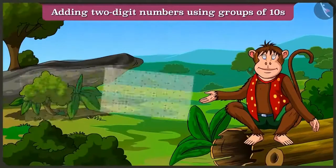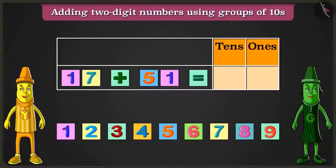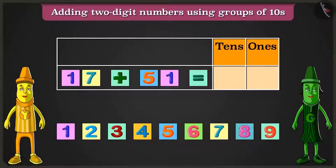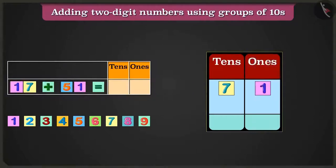Friends, today we will play an interesting game involving the addition of two-digit numbers. Greeny, look, this is a number block. The number made out of these blocks, seventeen and fifty-one, have to be added. You can add these numbers by writing them in the table of ones and tens. Here, for seventeen, in the box of tens write one and in the box of ones write seven. For fifty-one, in the tens box write five and in the ones box write one.